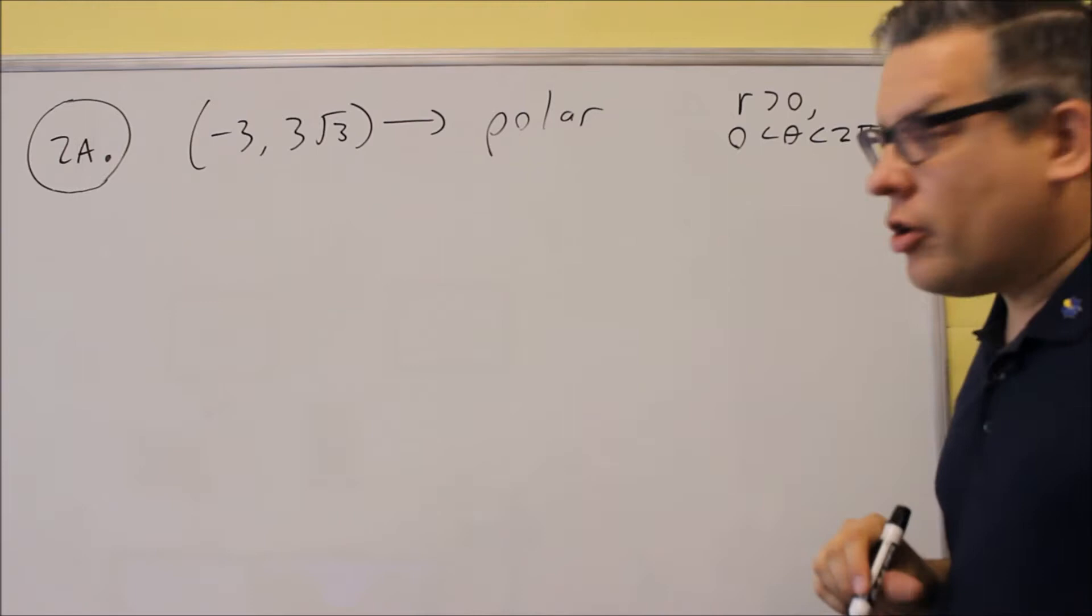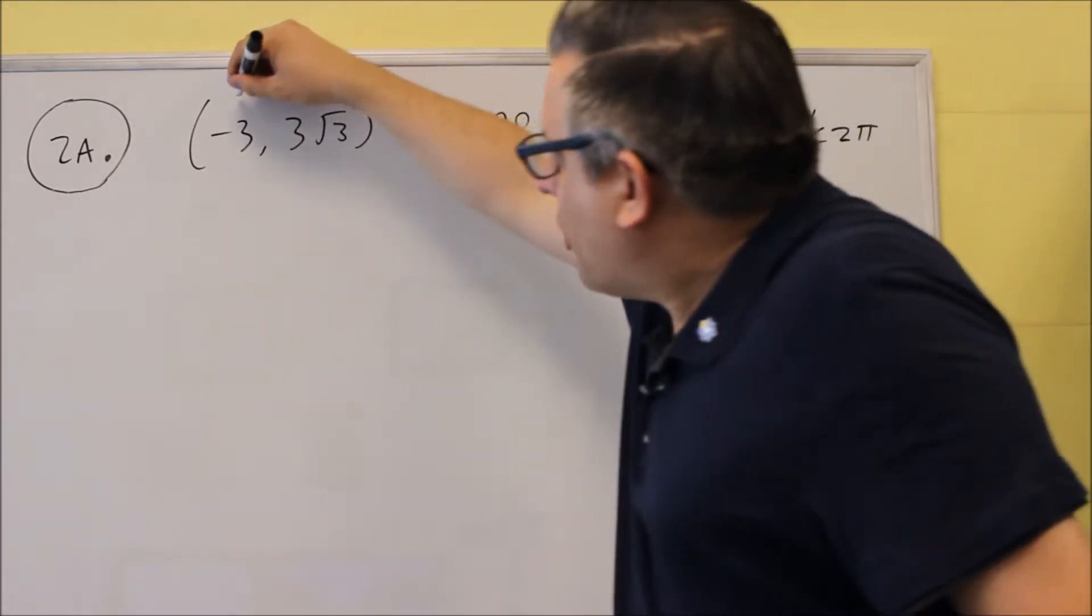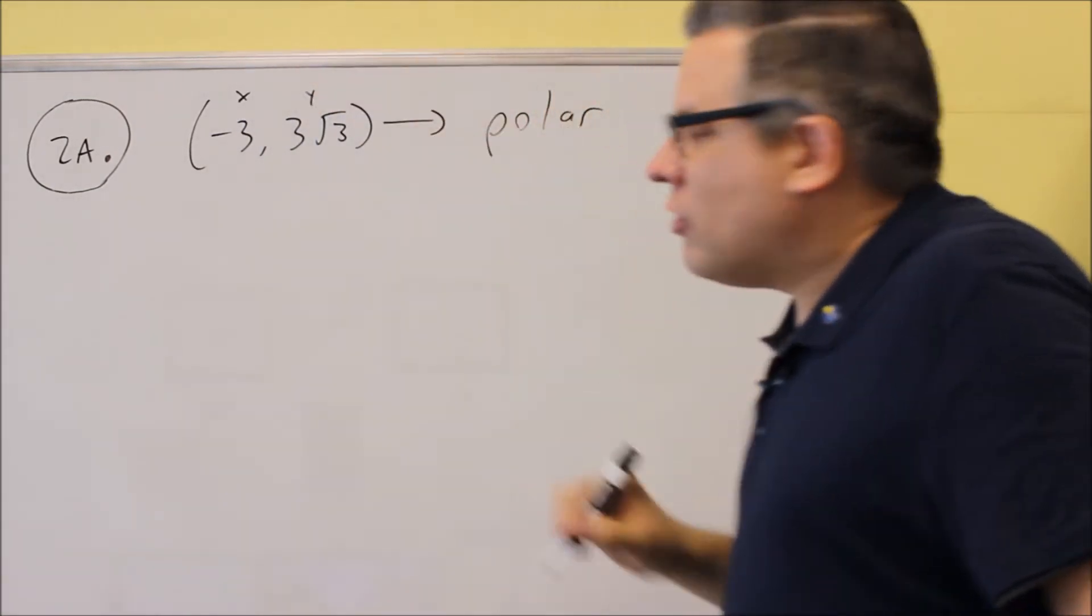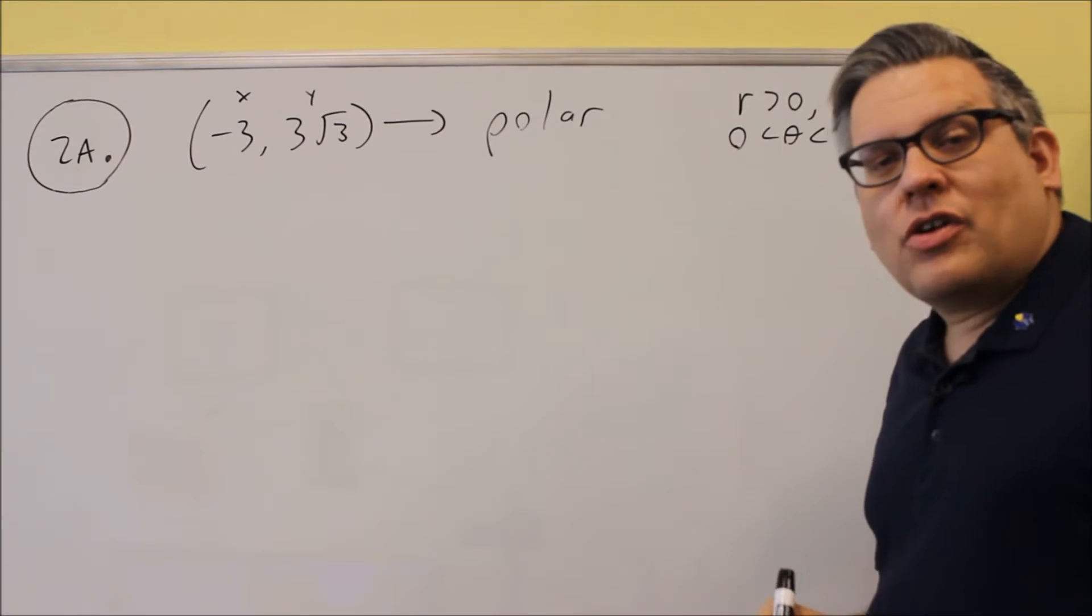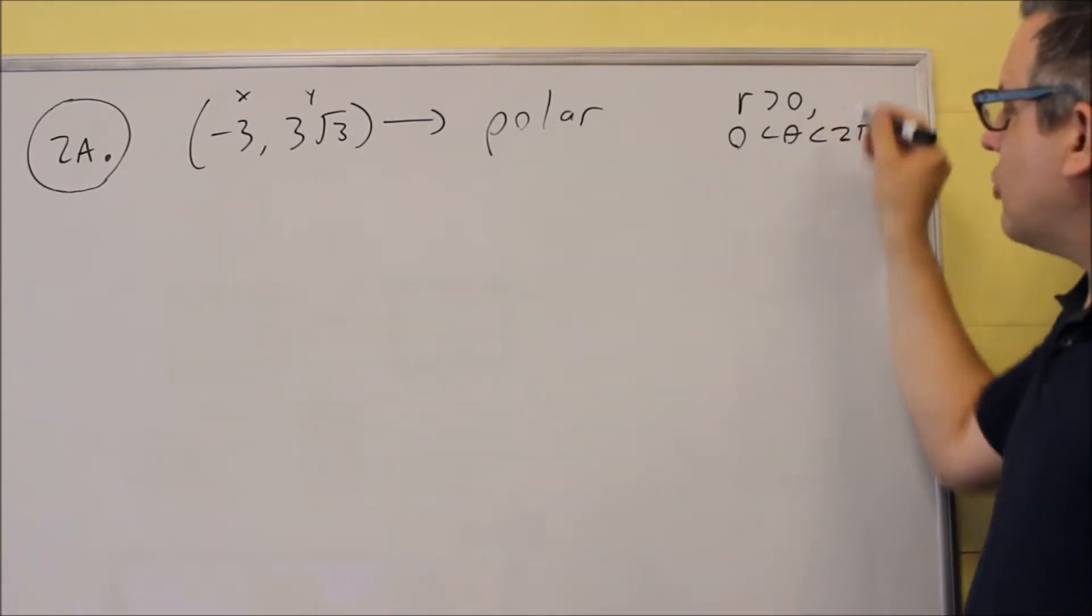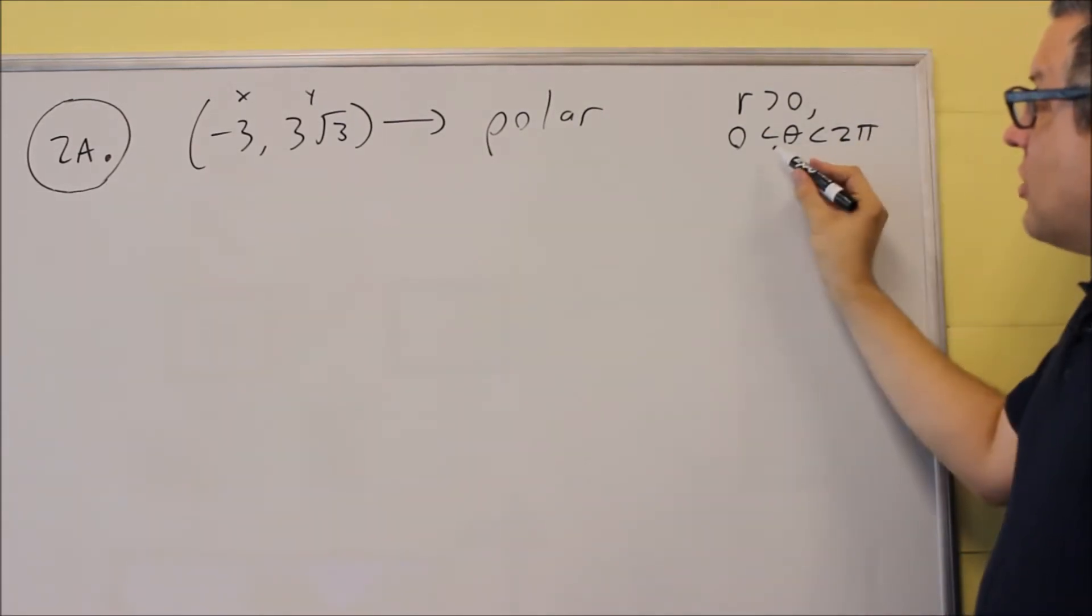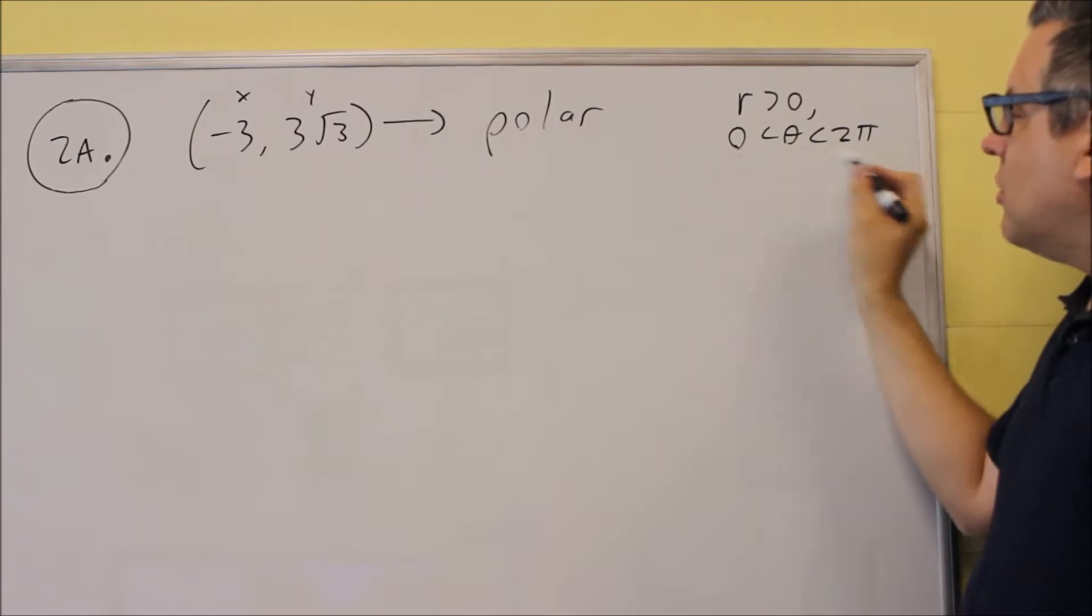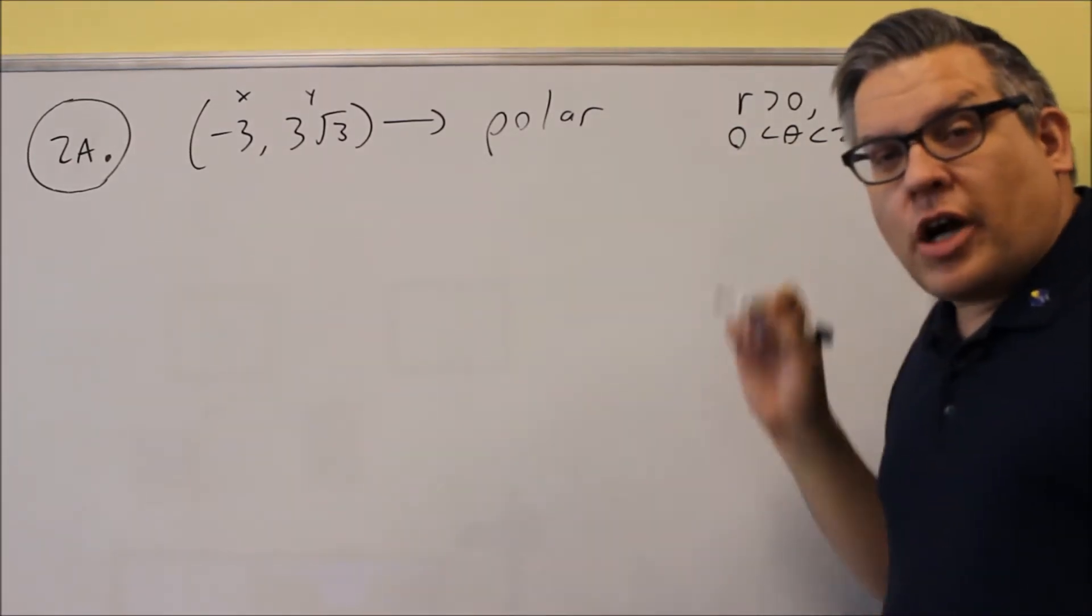Now you want to make sure you know the formulas and understand how to use them. If it's a rectangular coordinate, that means they give you an X and a Y. Your answer should only have R's and thetas in it when you're converting it over to polar. Here's some conditions we have to use: R is going to be greater than zero, and our angle has to be a positive angle that's in radians.